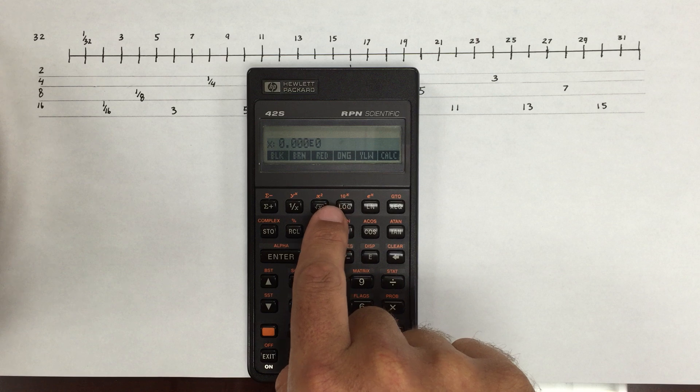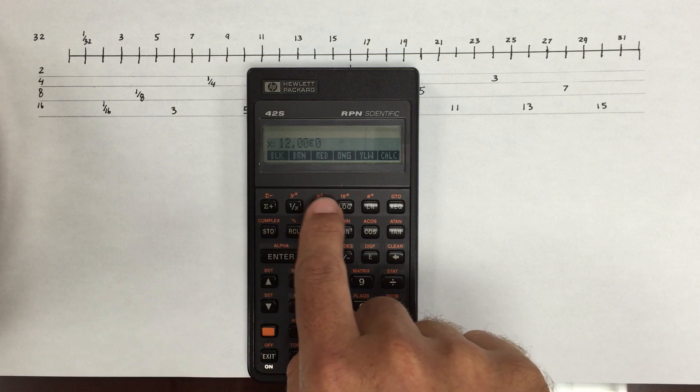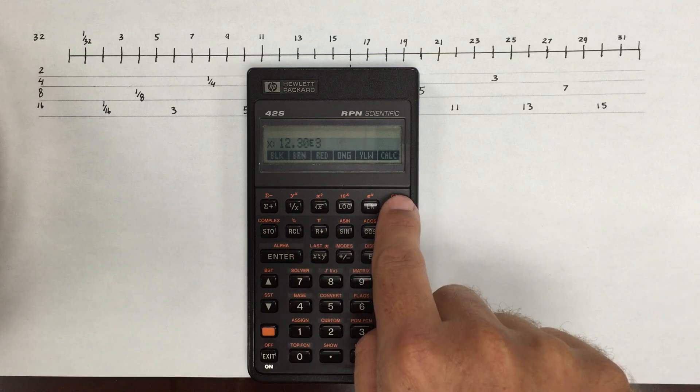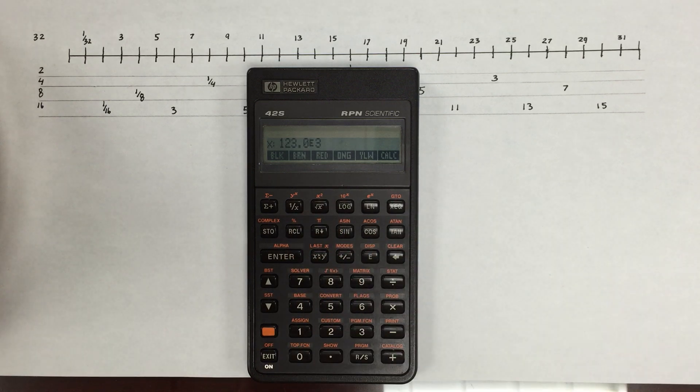So I could say brown, red, orange, black, red, and do the calculation. That is 123 kilo-ohms.